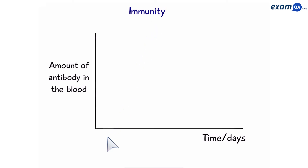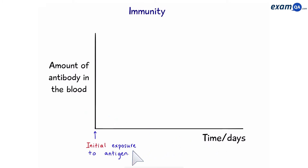With the immune response it's very common to be given a graph showing the amount of antibody in the blood over time in days. At the initial exposure to the antigen — the first time this particular antigen has entered the body — the concentration of antibodies produced shows a small rise. This is because plasma cells were produced in the first response. Once the infection is cleared, the concentration of antibodies drops back down.